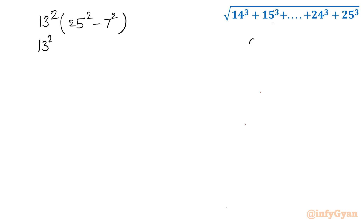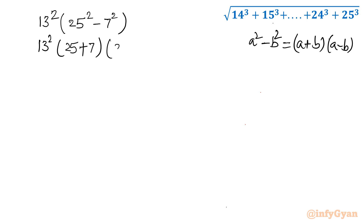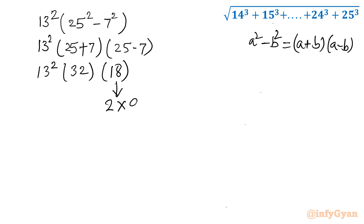Again, we apply the difference of squares identity: a²-b² = (a+b)(a-b). So 25² minus 7² becomes (25+7)(25-7) times 13². That gives us 32 times 18 times 13². Now 18 can be written as 2 times 9, so merging we get 13² times 64 times 9.